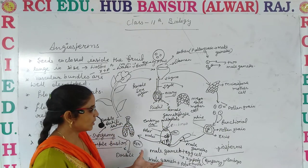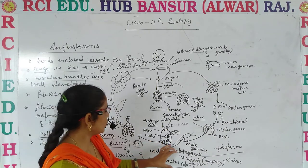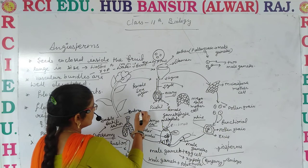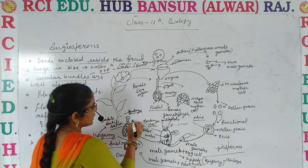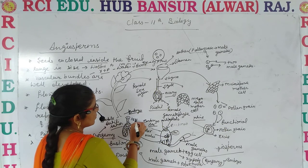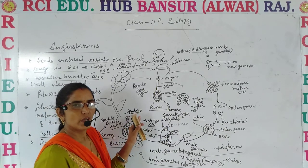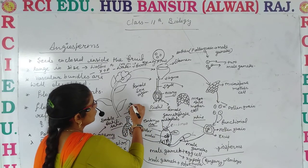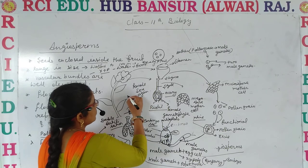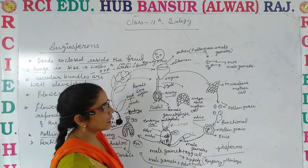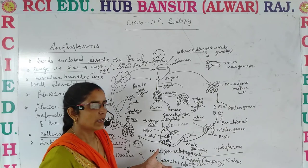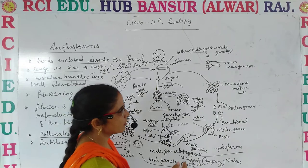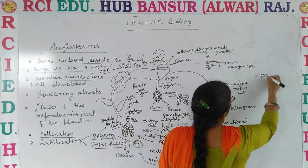Double fertilization gives rise to one embryo, which is well-developed, and the other gives rise to the endosperm. The endosperm provides food to the embryo. The embryo later develops into the fruit, and inside that the ovules produce the seed. This is the overall life cycle of the angiosperm. These angiosperms are the most advanced plants. Later on, they are categorized into two: monocots and dicots.